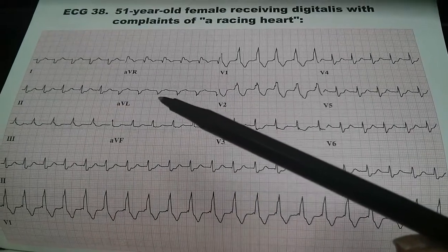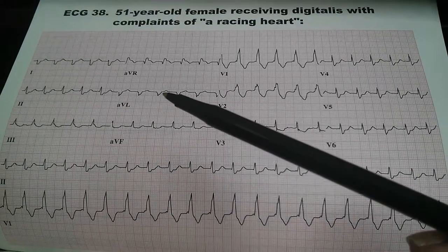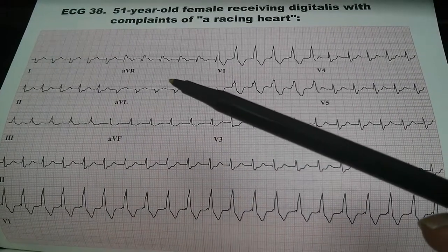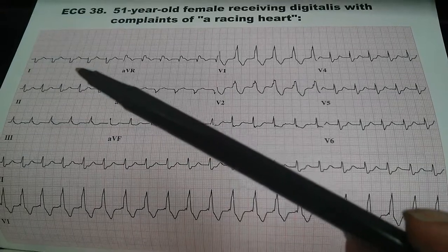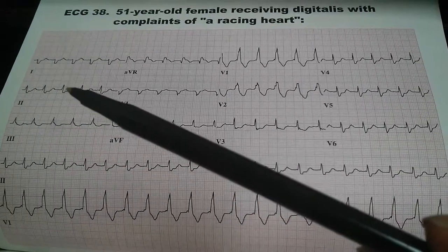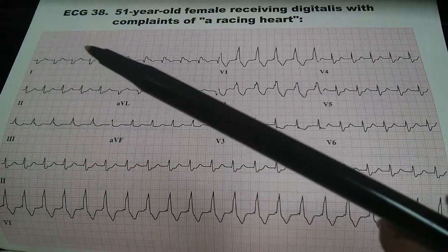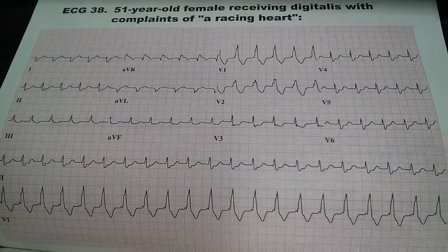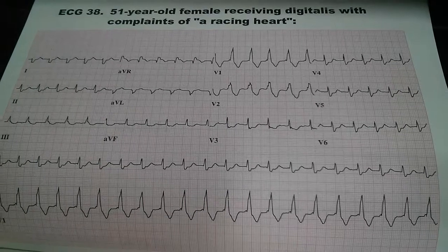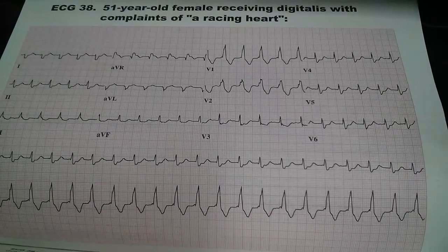In addition, looking at AVL which is pointing down, lead II which is predominantly up, and lead I which is down, we see that this patient has a right axis deviation.